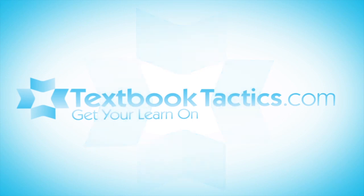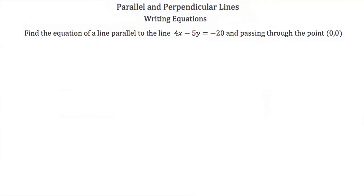Now let's see if we can take what we learned about parallel and perpendicular lines and use it to solve some equations. Here we're asked to find the equation of a line parallel to the line 4x minus 5y is equal to negative 20, and that this new line passes through the point 0, 0.